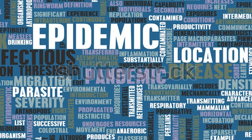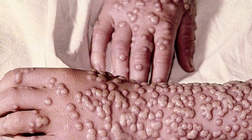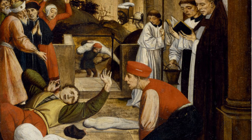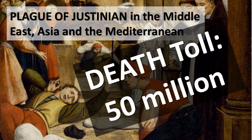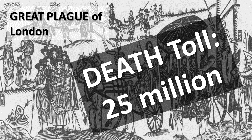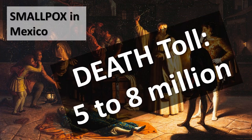The word epidemic comes from 'epi,' which means upon, and 'demos,' which means people. In 430 BC, smallpox killed more than 30,000 people in Athens, Greece. In 541 AD, the plague of Justinian killed 50 million people in the Middle East, Asia, and the Mediterranean. In 1334, the Great Plague of London wiped out 25 million people in Europe. In 1519, a smallpox epidemic killed between 5 and 8 million of the native Mexicans.